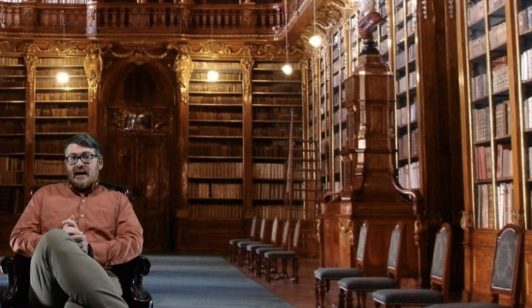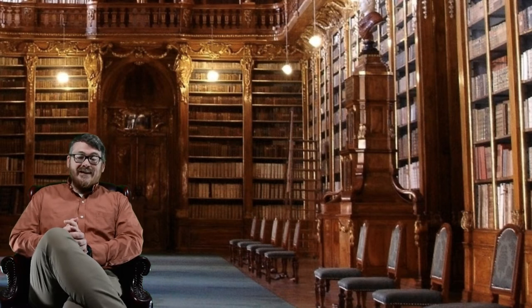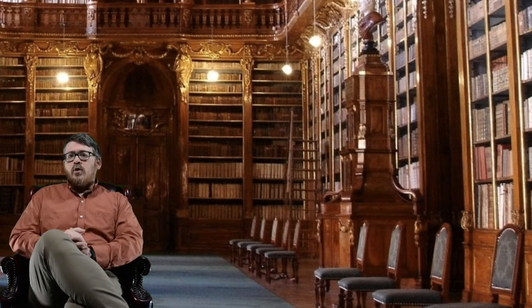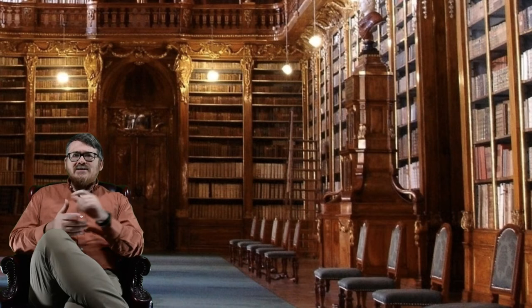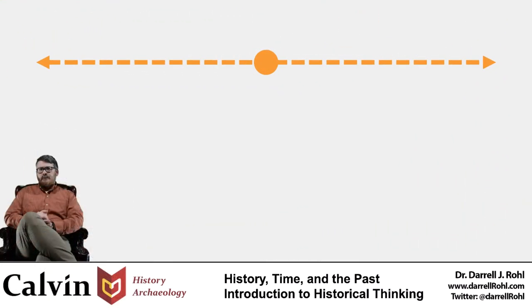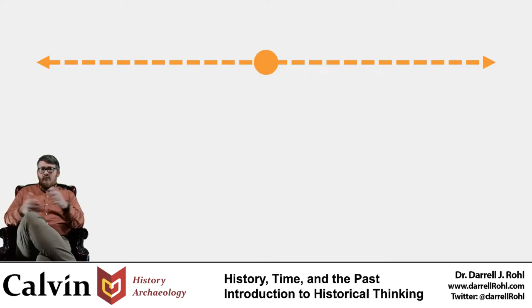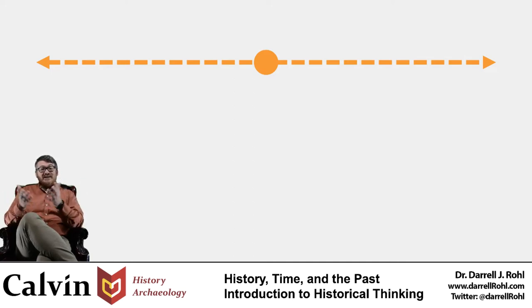Now today, the first thing I want to deal with is the important difference between history and the past, which are frequently confused — that word history often being used when people are really referring to the past. Let's start by thinking about time. The nature of time remains a significant matter of debate, with really interesting ideas and complications thrown around by both philosophers and physicists. And time can be viewed as linear, cyclical, or even as an illusion altogether.